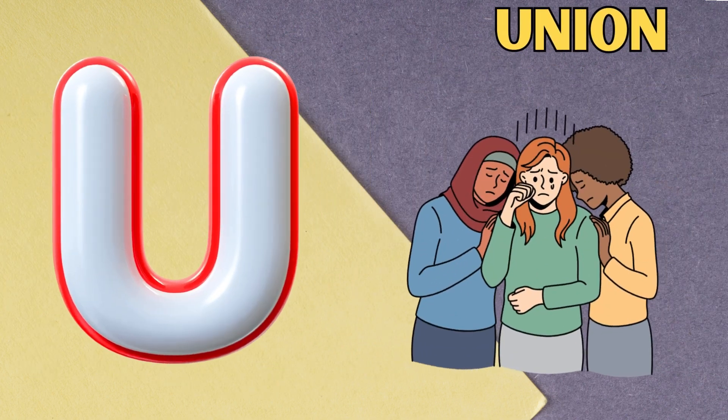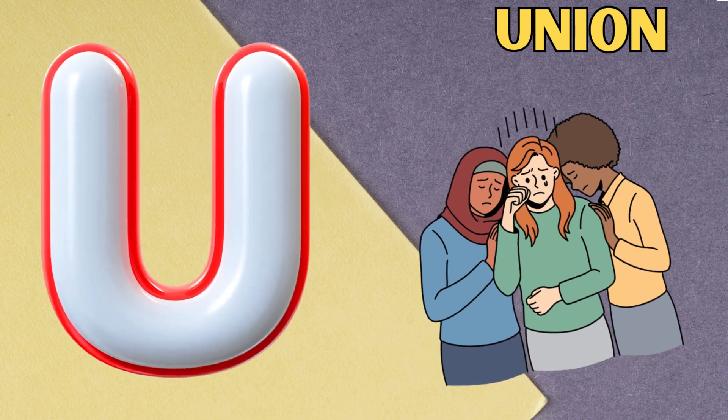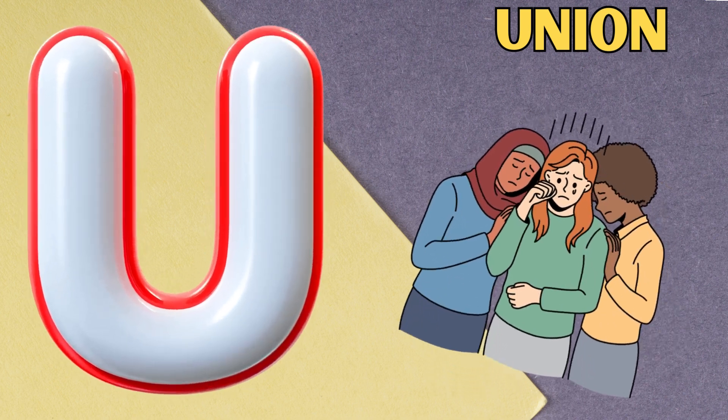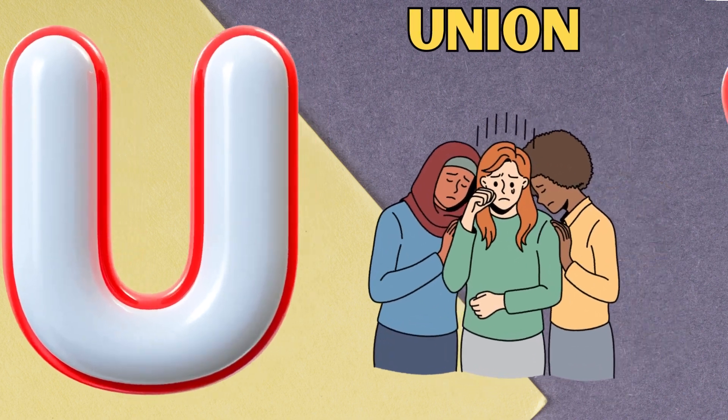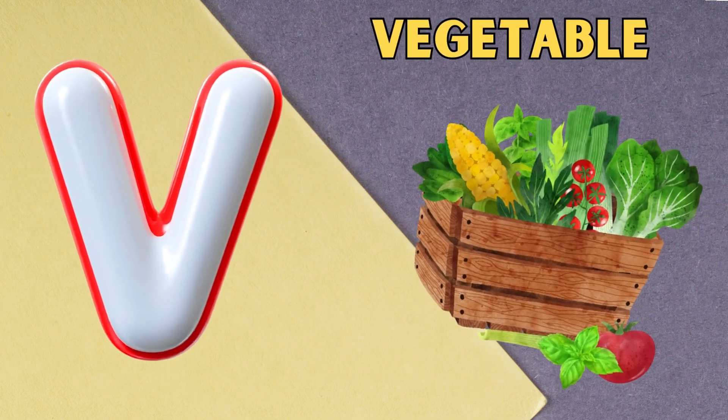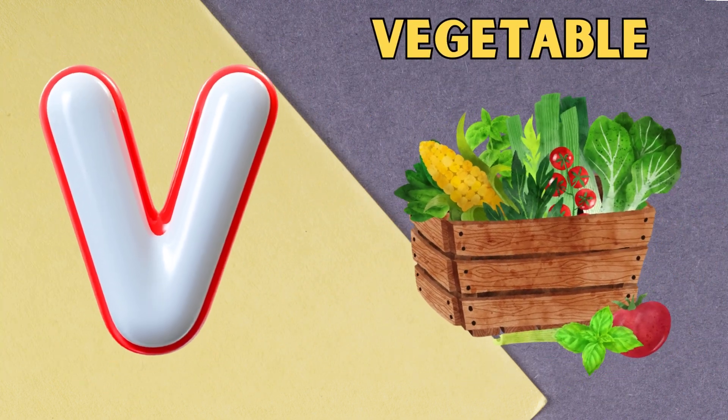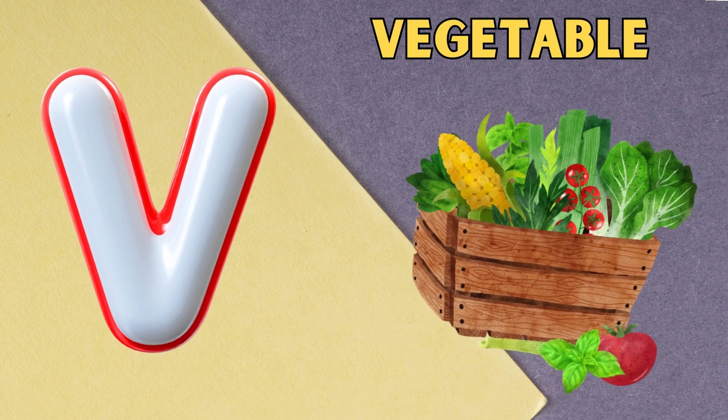U is for union, yu, union. V is for vegetable, v, vegetable.